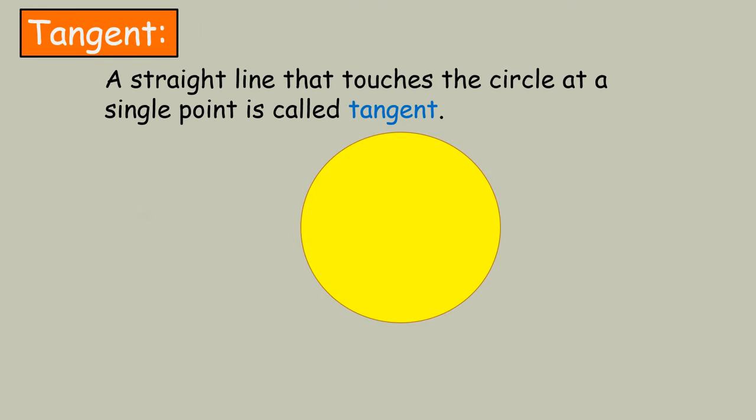Tangent. A straight line that touches the circle at a single point is called a tangent.